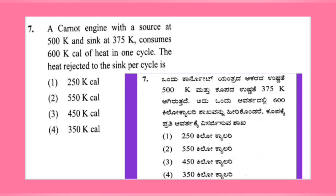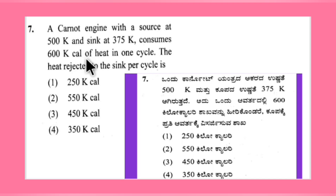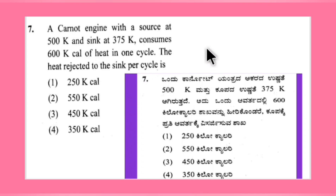Next, question number 7: a Carnot engine with a source at 500K and a sink at 375K consumes 600 Kcal of heat in one cycle. The heat rejected to the sink per cycle is what we need to find.